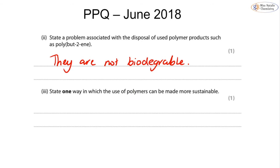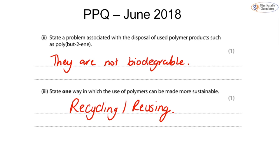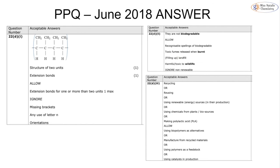State one way in which the use of polymers can be made more sustainable: the easiest answer is recycling or reusing. Rather than single-use plastics, try to buy plastics that can be used over and over again, such as sturdy plastic water bottles or plastic bags that can be reused for shopping. We can see the mark scheme for these June 2018 papers. That's everything for topic 5b - as said, most of it is revision, but if you have any questions please feel free to leave a comment below.